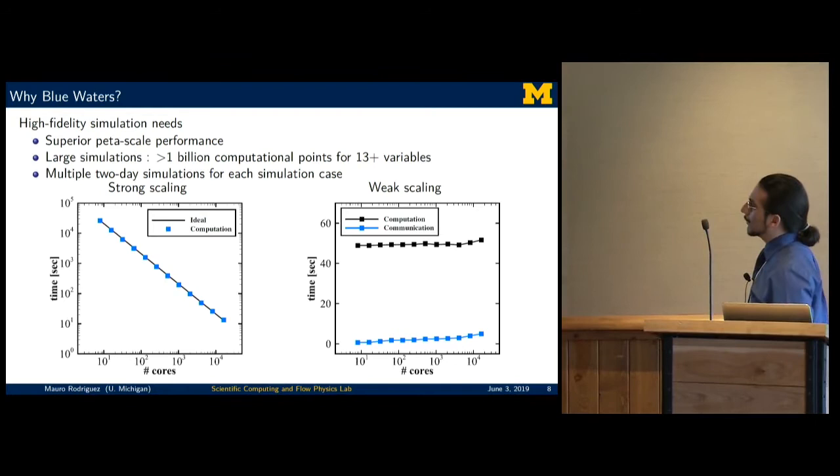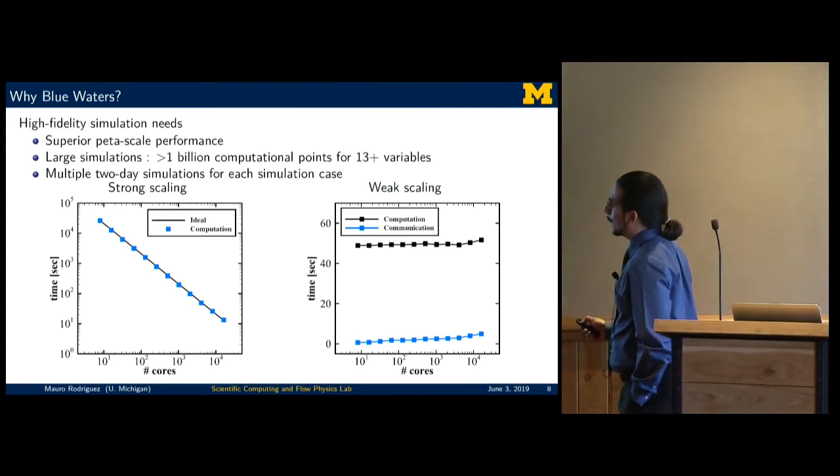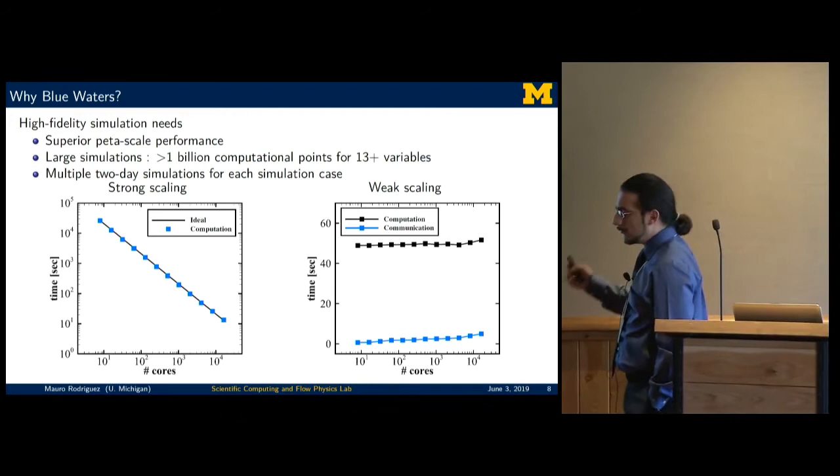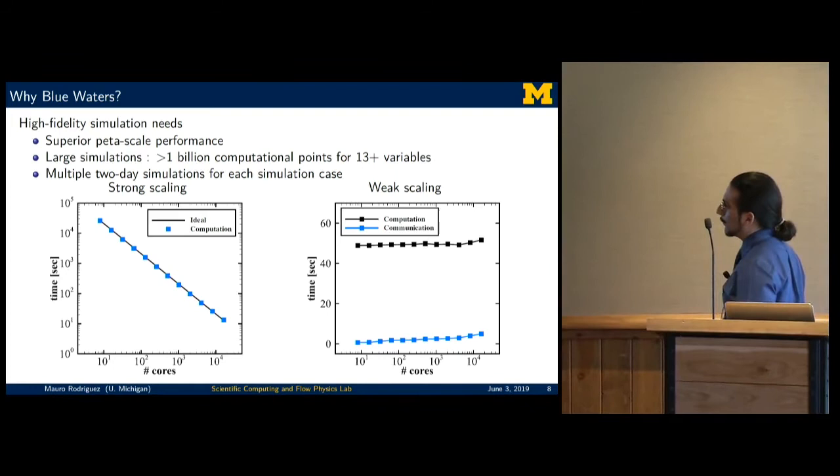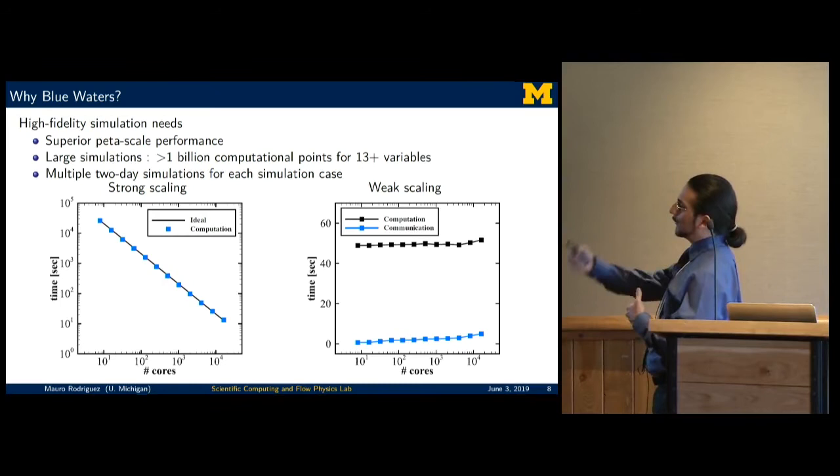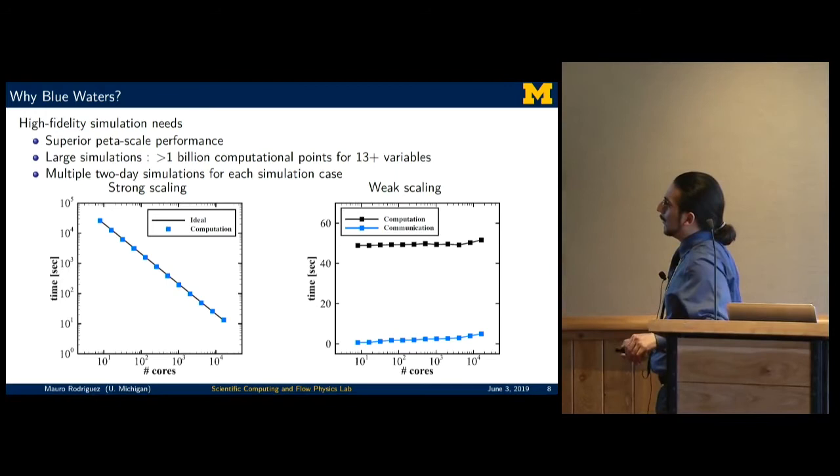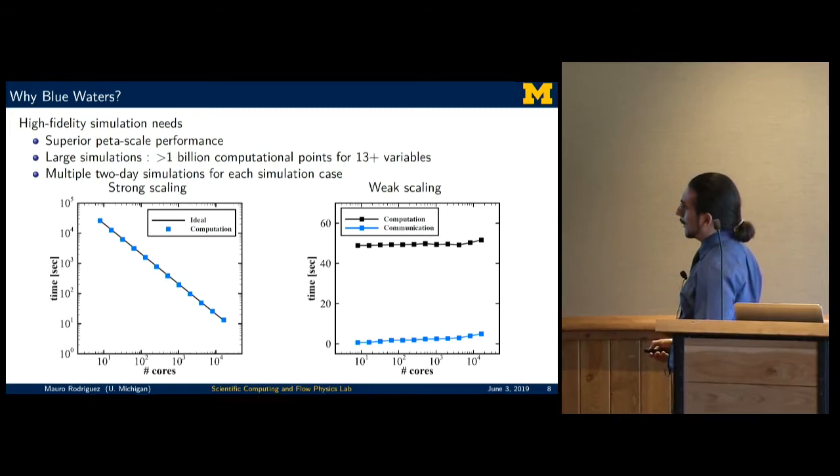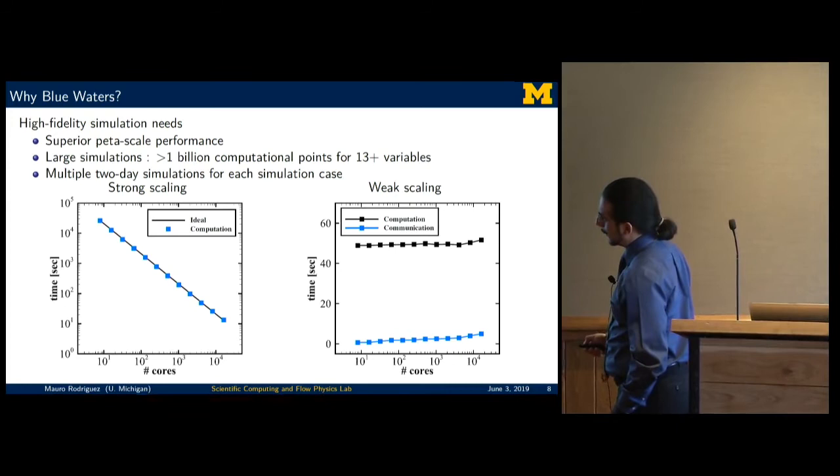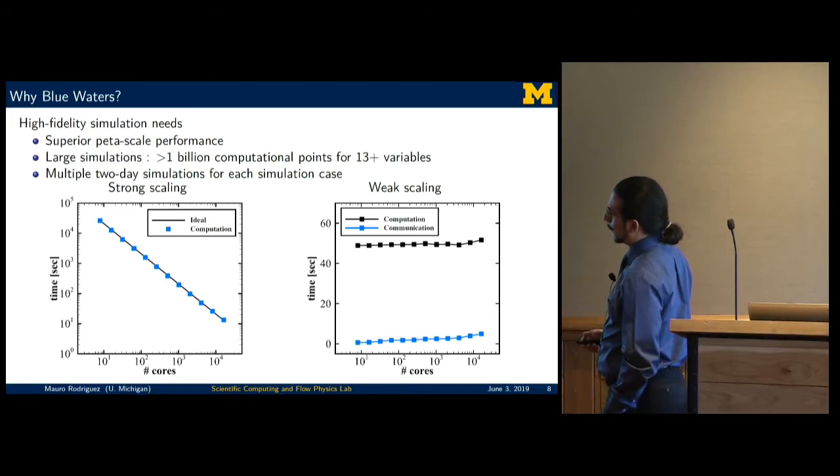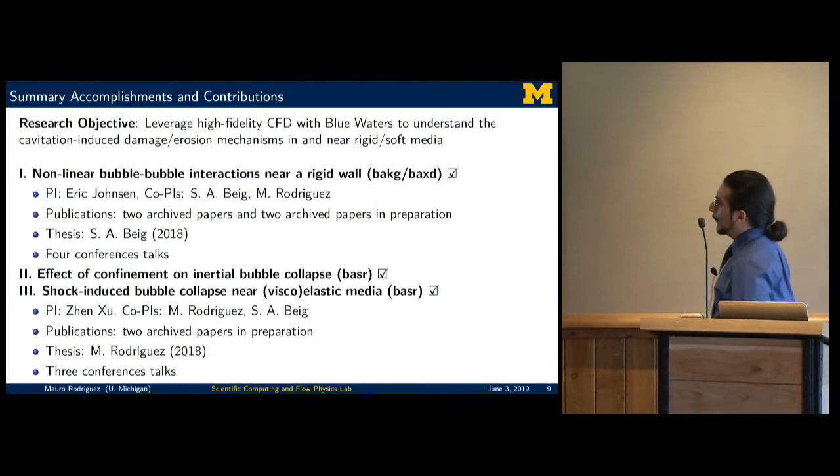Why Blue Waters? The high-fidelity simulations really need superior petascale performance. We need to run very large simulations, more than 1 billion computational points for over 13 variables. The 13 variables is the low end of the variables that we need to solve and evolve over space and time. The simulations could take not only the full 48 hours, but also we need to run them multiple times, saving the last restart file and continuing the simulation even past 48 hours for each simulation case to fully resolve the problem and see the bubble collapsing near these objects. For the strong and weak scaling, we get very good ideal comparison with the ideal expectation. Here I'm showing the operational range for all the runs I'm showing you today. We're always running in the 10^4 if not 10^5 number of cores for our simulations.